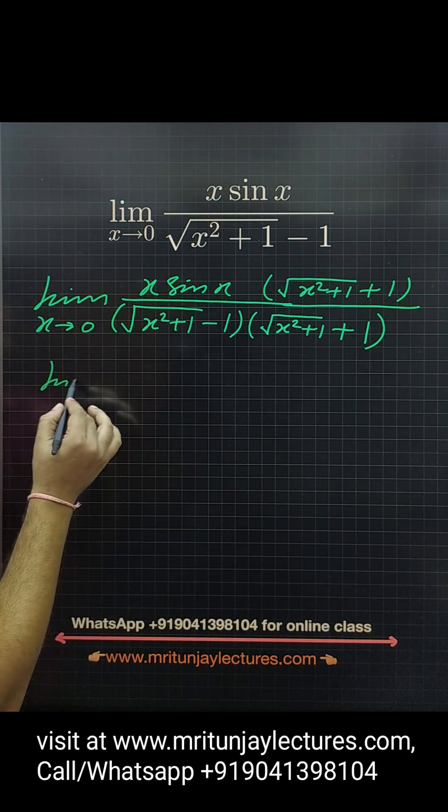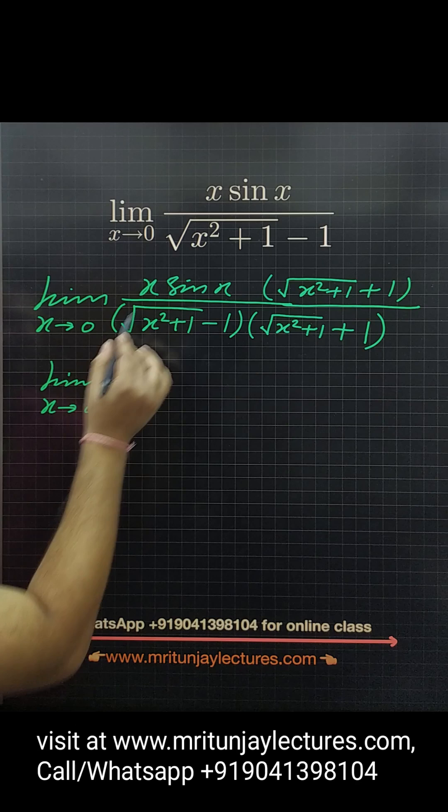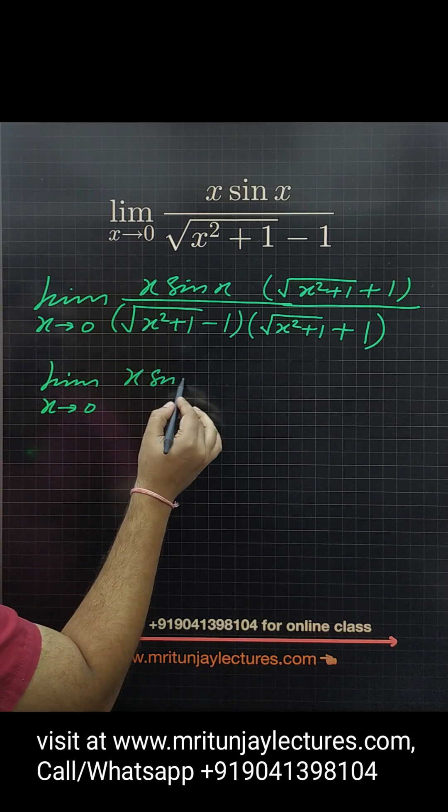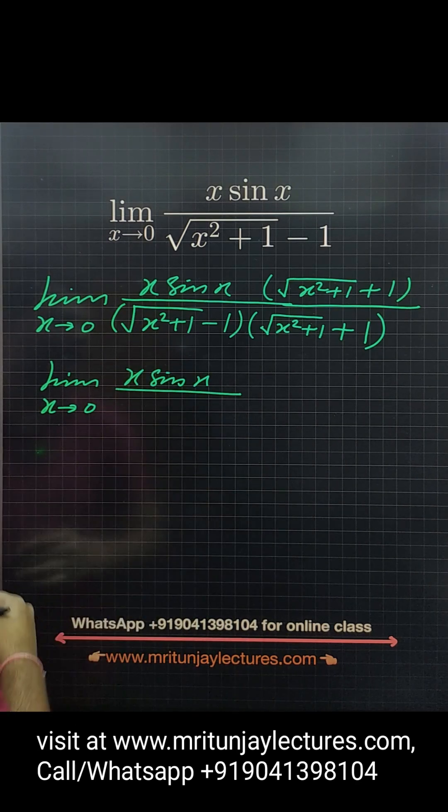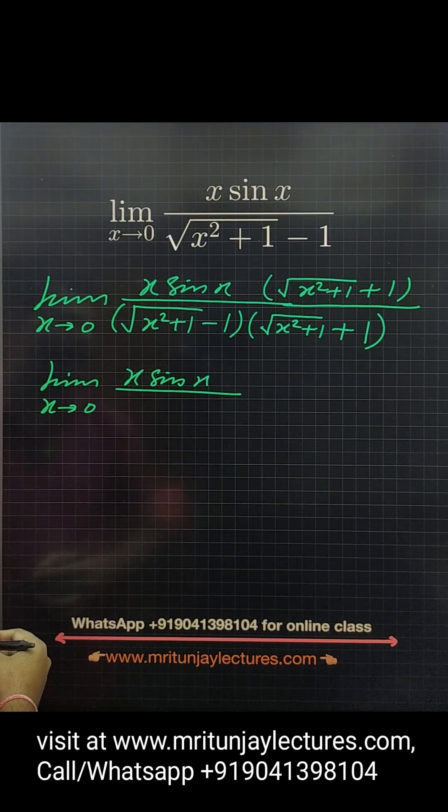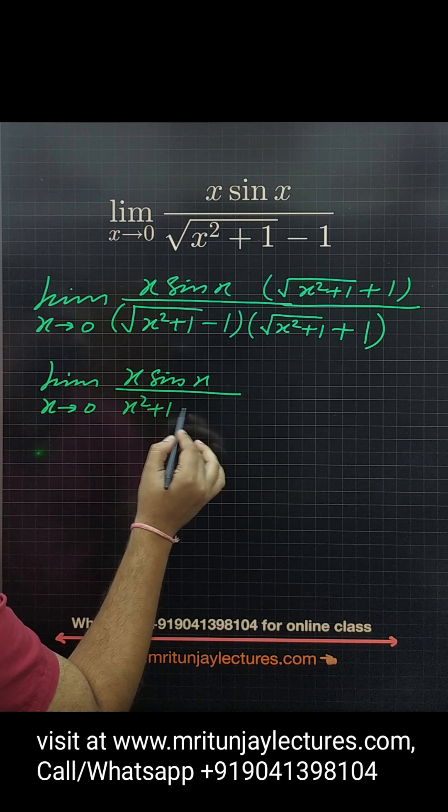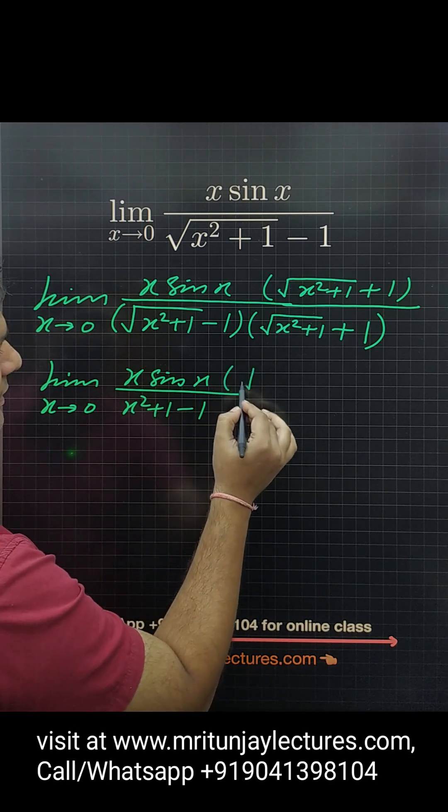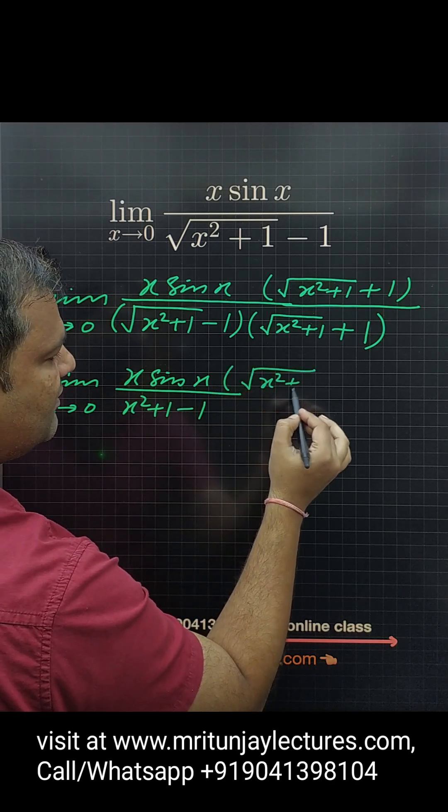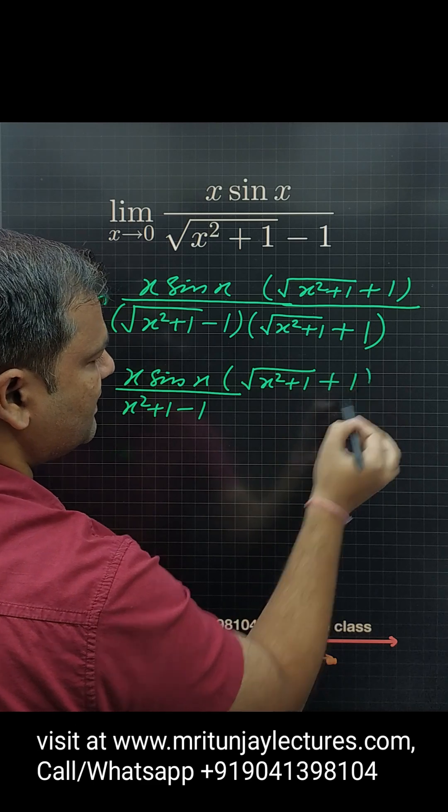Then that one returns x sine x. What about that value? x square plus 1 minus 1, and here under root x square plus 1 plus 1.